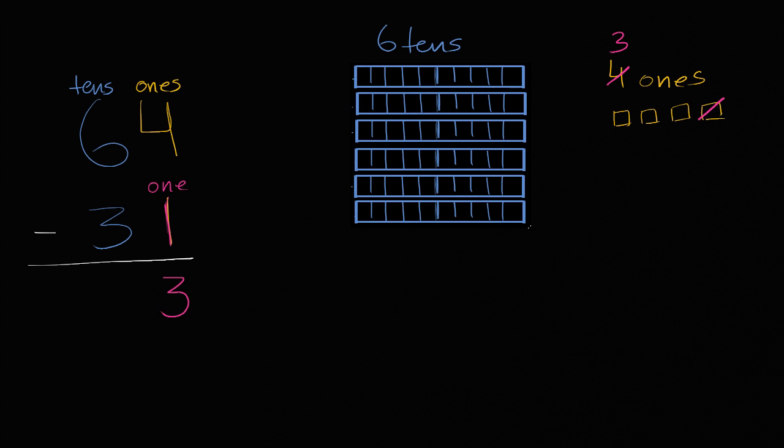Now let's think about the tens. So I had six tens. I'm gonna take away three of them. I'm gonna take away three of the tens. So let's do that. Let's take away that's one ten, two tens, and then three tens. And so what am I going to have left over?